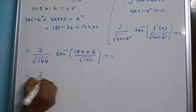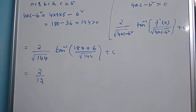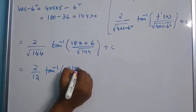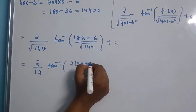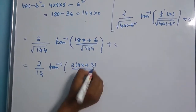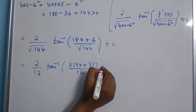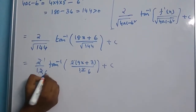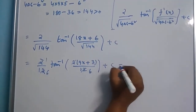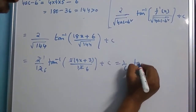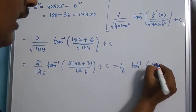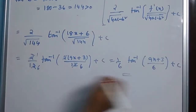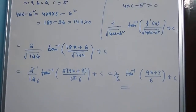2 over root of 144 — root of 144 is 12 — so we get 2 over 12 times tan inverse of, taking 2 as common from the derivative (18x plus 6), we get 9x plus 3, divided by 12, plus c. Simplifying 2 over 12 gives 1 over 6. So the answer is (1/6) tan inverse of (9x plus 3) divided by 6, plus c. This is the solution of the given problem.